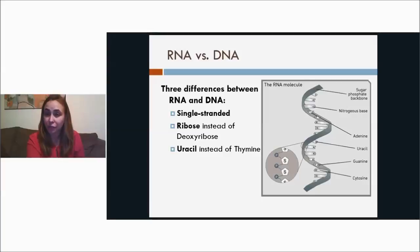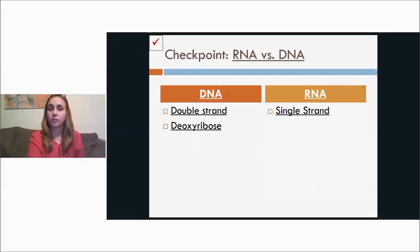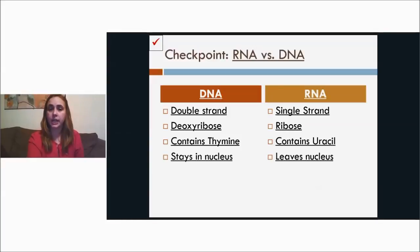RNA has ribose sugar instead of deoxyribose, and RNA has uracil instead of thymine. You know, if you ever see a U anywhere on the molecule as one of the bases, you are looking at an RNA molecule. And if you ever see a T, you are looking at DNA.